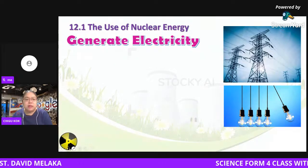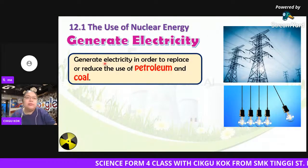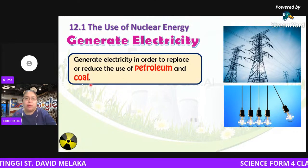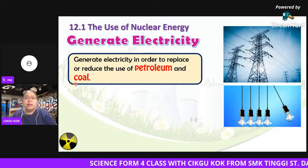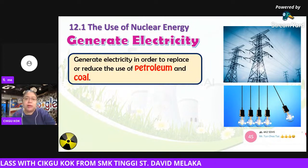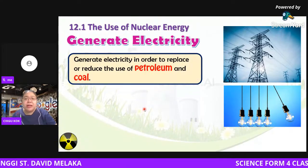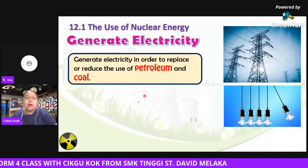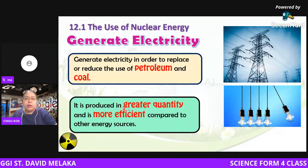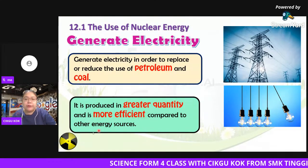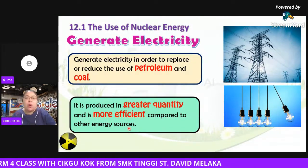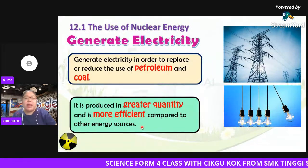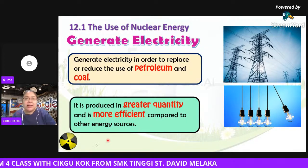Nuclear energy can generate electricity, which can replace or reduce the use of petroleum and charcoal. Bacteria and coal will eventually run out — they cannot be recreated quickly. But nuclear energy can be used repeatedly. It is produced in greater quantity and is more efficient compared to other energy sources, even though it has many disadvantages.